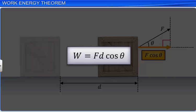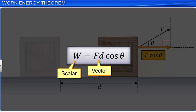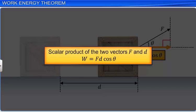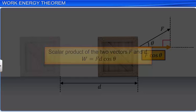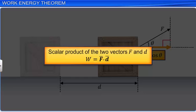In this expression for the work done, both F and D are vectors, whereas the product — work done — is a scalar. Thus, this quantity F cos theta is called the scalar product of the two vectors F and D. In vector form, it is denoted by a dot in between the two, as shown, and is read as F dot D. Hence, it is also referred to as the dot product.